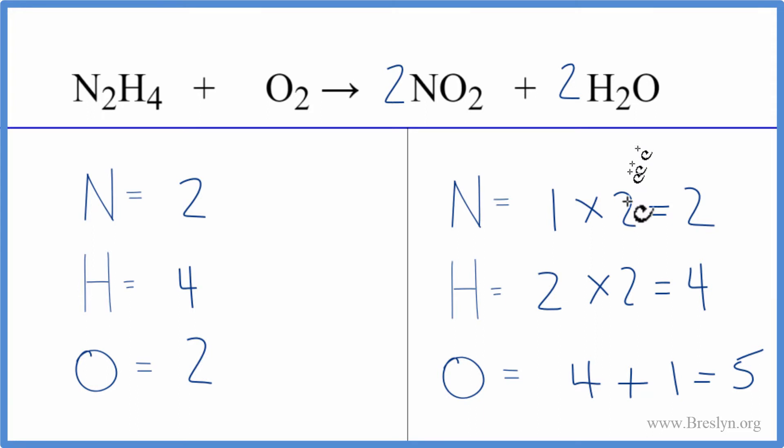And then we need to update the oxygens again. So now we have two times two. That's four. Plus one times two. That gives us two. That's six. And that's an even number. That makes this really easy because we have two here. Put a coefficient of three. Two times three. That gives us six.